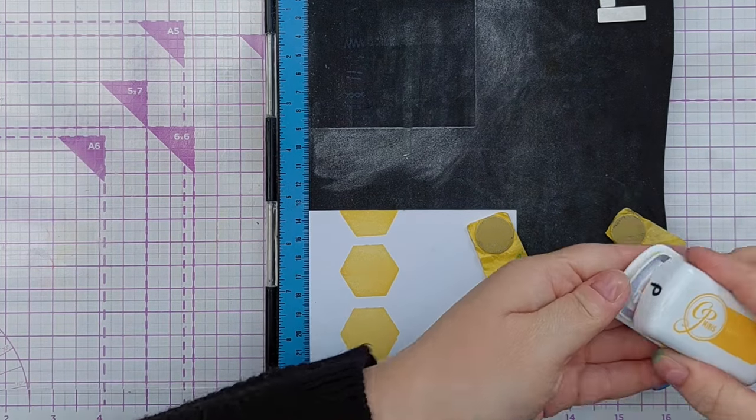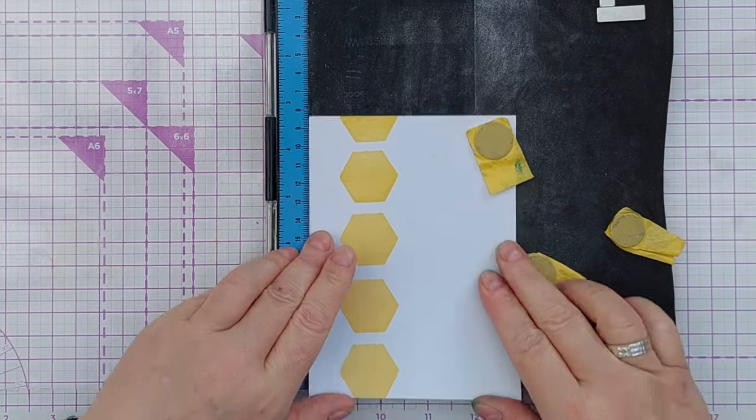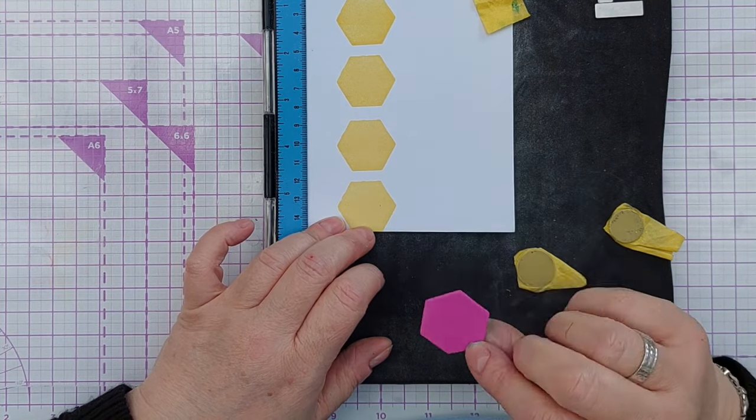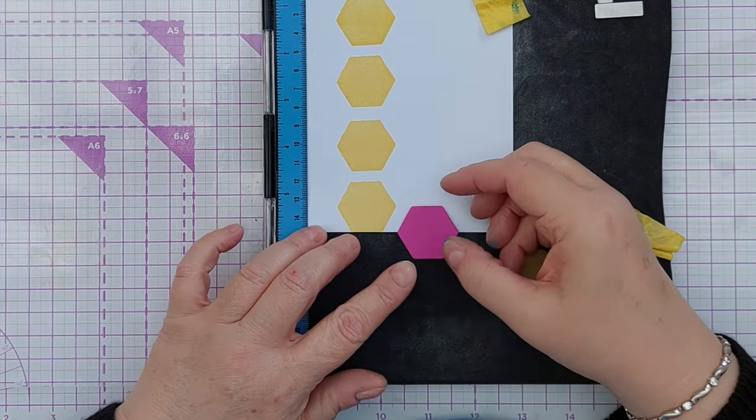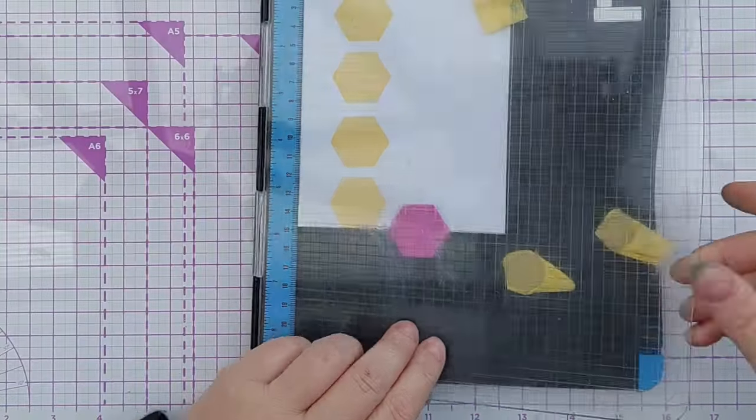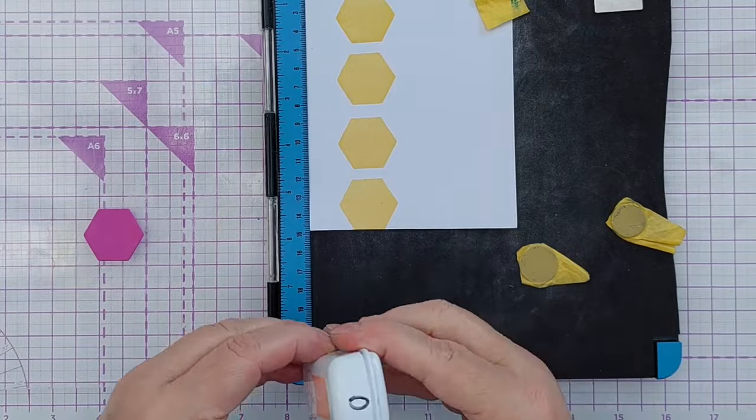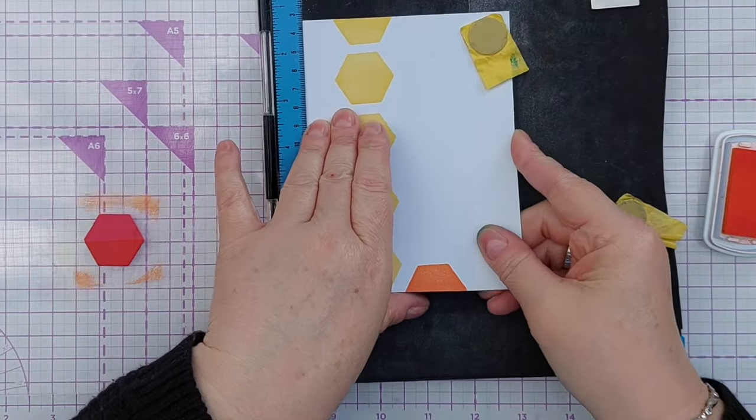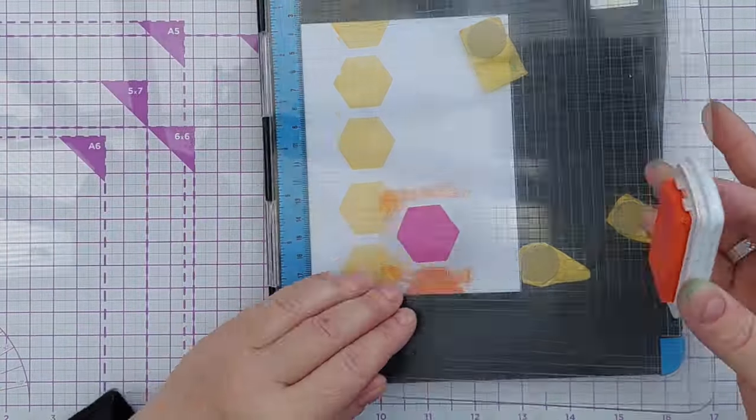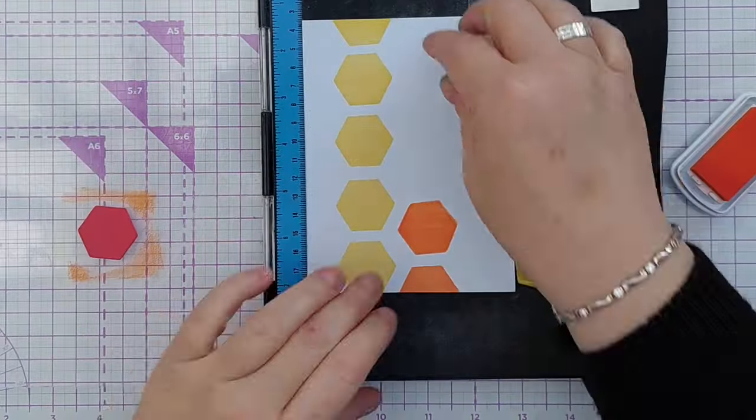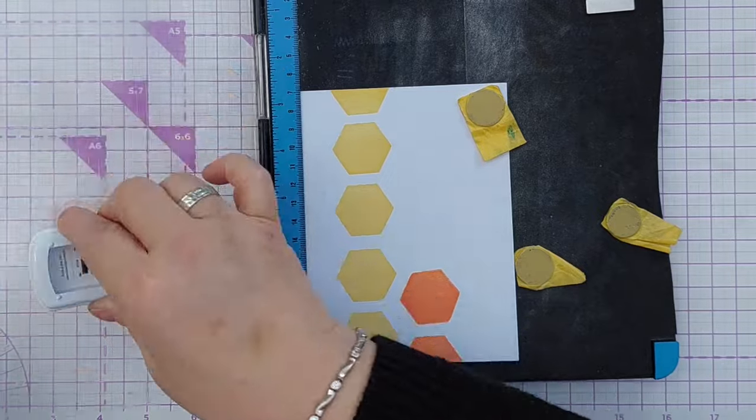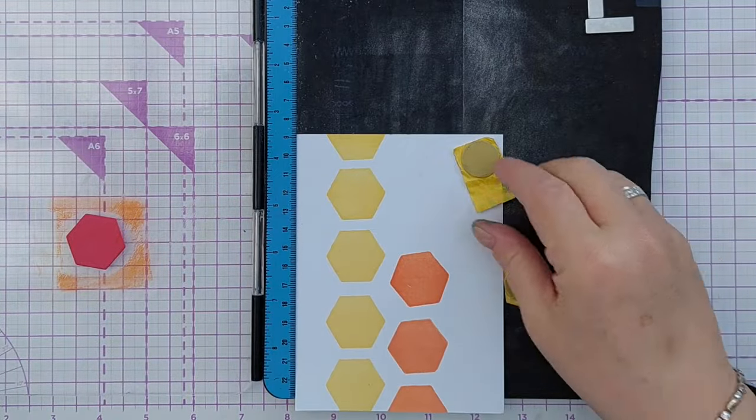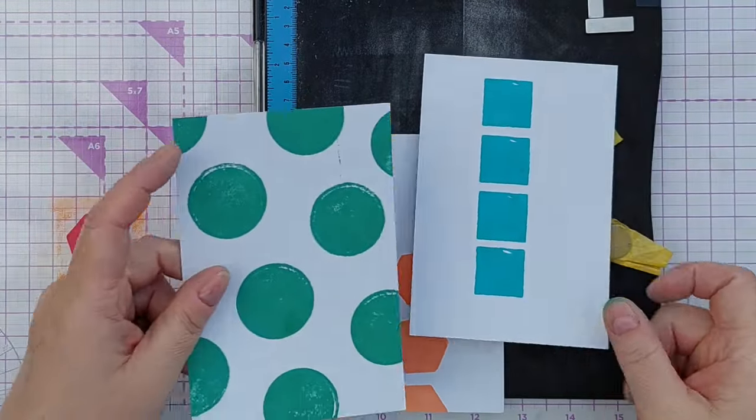So what color was that? That was Catherine Pooler Tiara. Pop that back up the top there, get my hexagon and kind of slot it in like that. A bit more glue over here, pick that up and now I'm going to use Bellini. So I could keep going with that, cover the whole paper or just part of the paper. We've got hexagons, squares and circles.